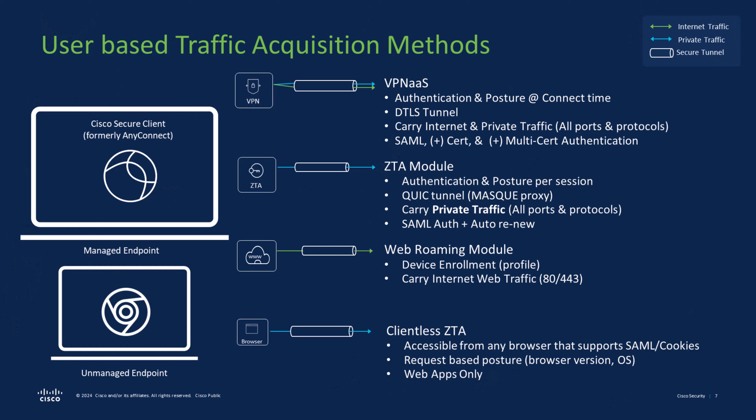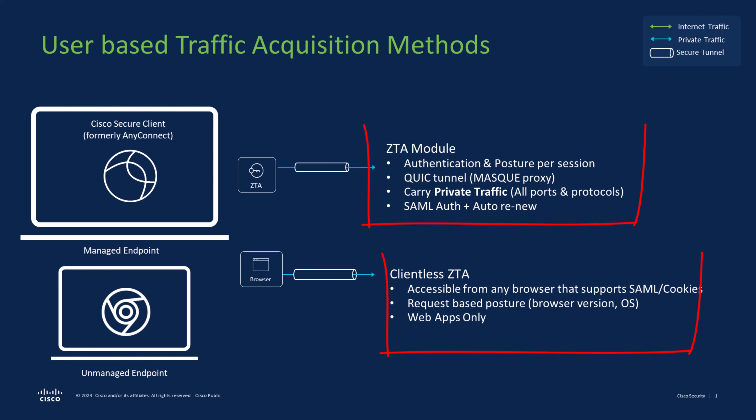Users access applications in two methods: it can be a managed endpoint or an unmanaged endpoint. Those methods fall into four categories — VPN, ZTA Module, Direct Connect, and Clientless ZTA. We're going to concentrate on two methods in two categories: ZTA and Clientless ZTA.